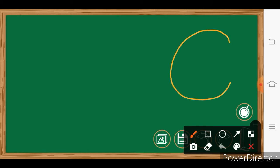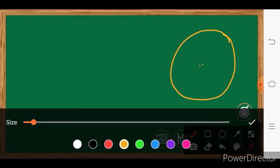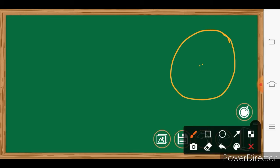In the circle, this is the radius. This total length is called the diameter. Diameter equals 2r, so 2r = D.